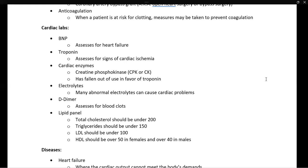A lipid panel gives us four numbers. Total cholesterol should be under 200. Triglycerides should be under 150. LDL, or low-density lipoprotein — also known as the bad cholesterol — should be under 100, though some patients such as those with diabetes may need an even lower LDL. LDL is the target when treating a patient with cholesterol medication. HDL, or high-density lipoprotein — the good cholesterol — should be over 50 in females and over 40 in males.